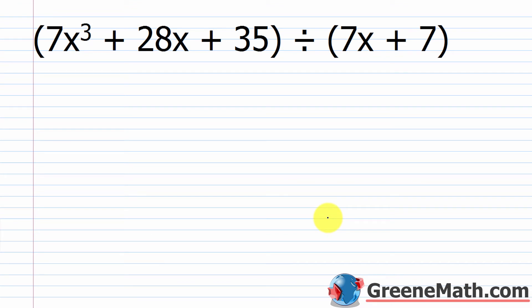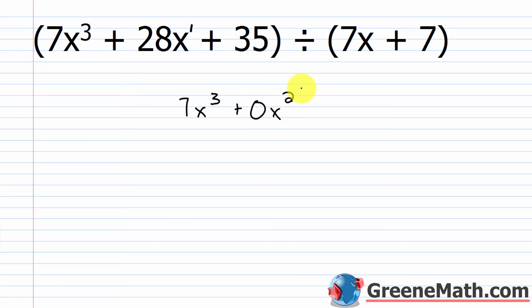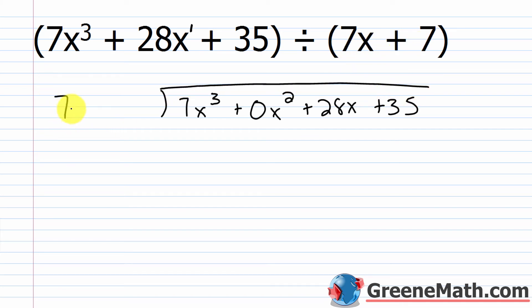Let's take a look at another example. We have 7x cubed plus 28x plus 35, divided by 7x plus 7. So let's take this dividend: 7x cubed, and the next term is 28x — that's to the first power. So I'm missing my x squared term again — plus 0x squared as a placeholder. Then plus 28x, then plus 35. And 7x plus 7 goes off to the side as my divisor.